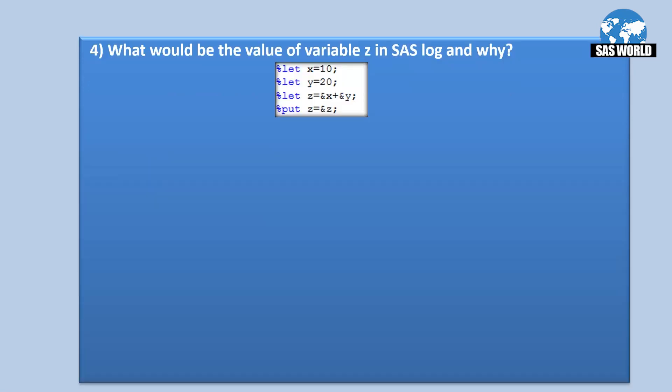What would be the value of variable Z in SAS log? In this screenshot, we are creating three macro variables: %LET X = 10, %LET Y = 20, and %LET Z = &X + &Y. Then we are printing the value of Z using %PUT, which prints to SAS log. So what would the value of Z be?